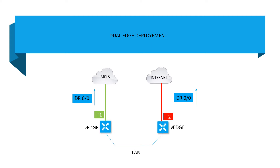Now let's examine dual edge deployments. You can see VH1 and VH2 on screen. On VH1 there is a physical MPLS connection, and on VH2 there is a physical internet connection. There is one default route towards MPLS and one towards the internet. The T-Lock is T1 for MPLS and T2 for internet, with a common LAN deployment. However, something is broken — VH1 is not aware of internet connectivity and VH2 is not aware of MPLS.